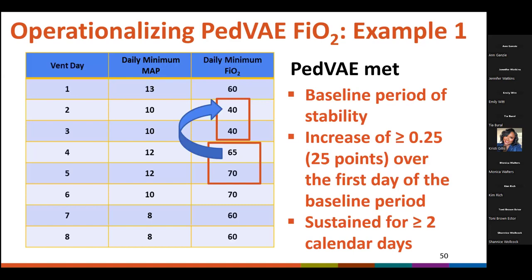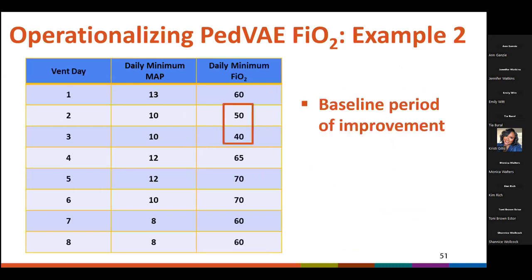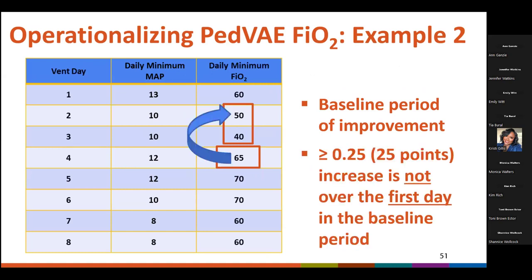In this example, there is a period of improvement in the daily minimum FiO2 parameter on vent days two and three, when the daily minimum FiO2 decreases from 50 to 40. This baseline period is immediately followed by an increase in the daily minimum FiO2 on vent day four. However, the increase on vent day four is not at least 25 points over the daily minimum FiO2 of the first day in the baseline period, which is vent day two where the daily minimum FiO2 was 50. So PVAE is not met in this case.